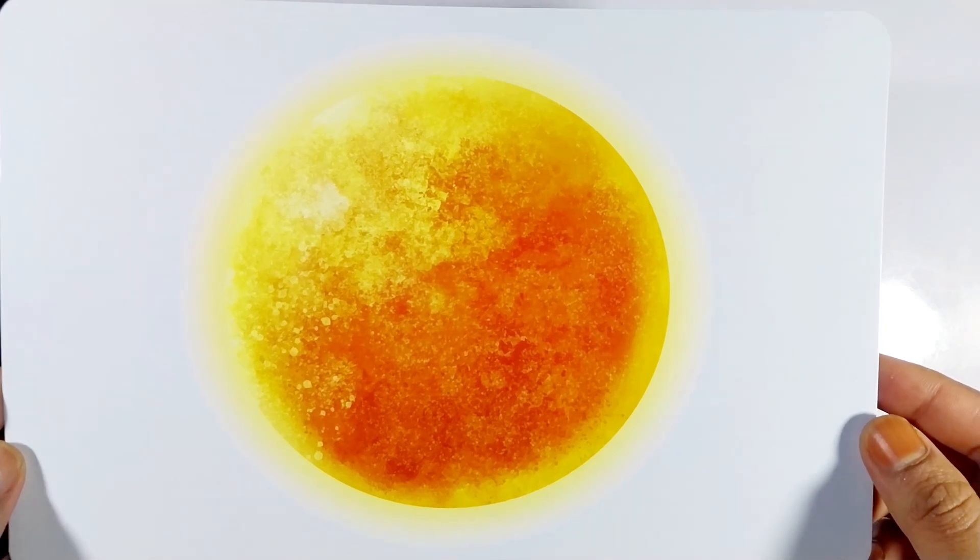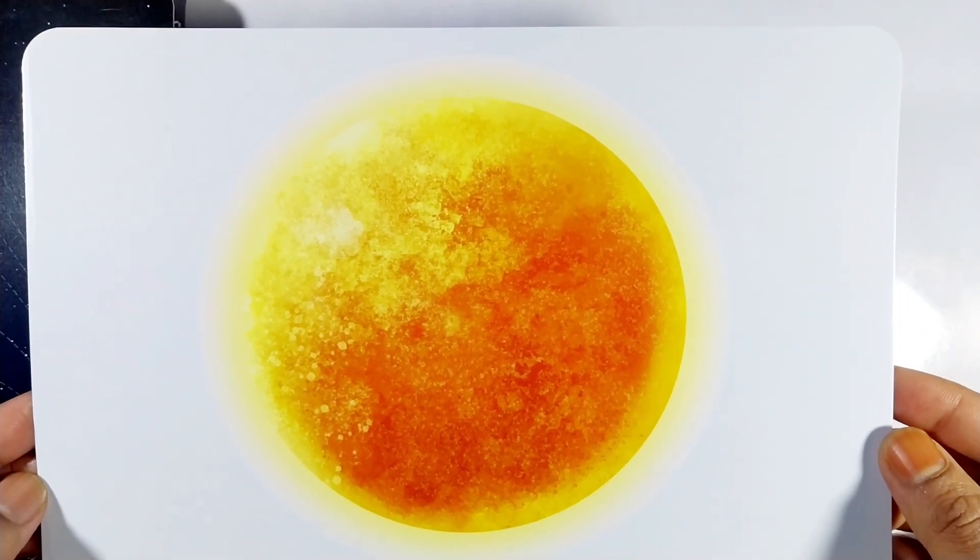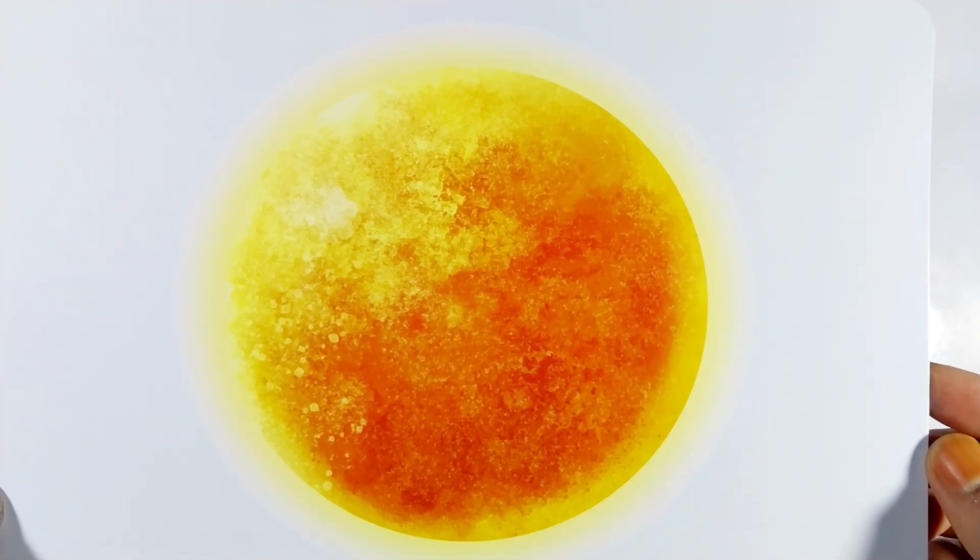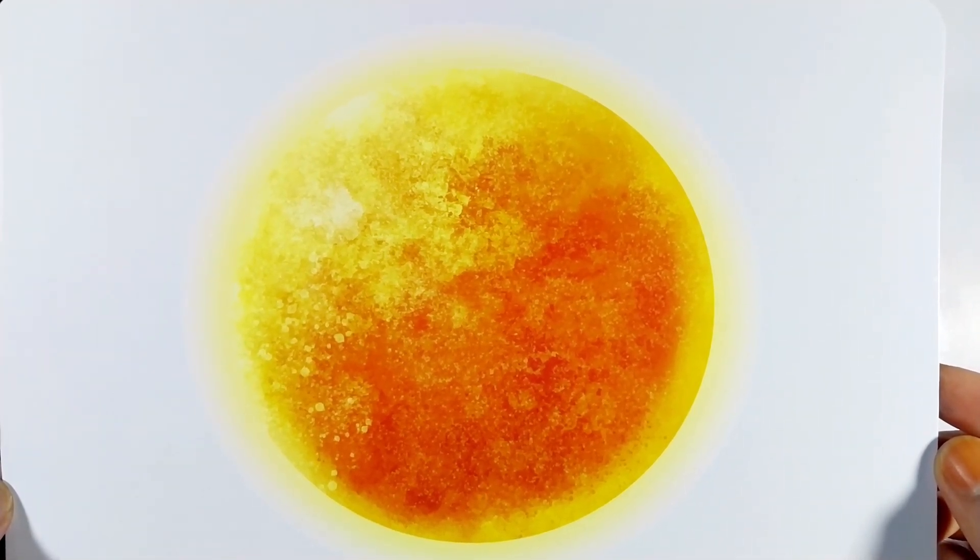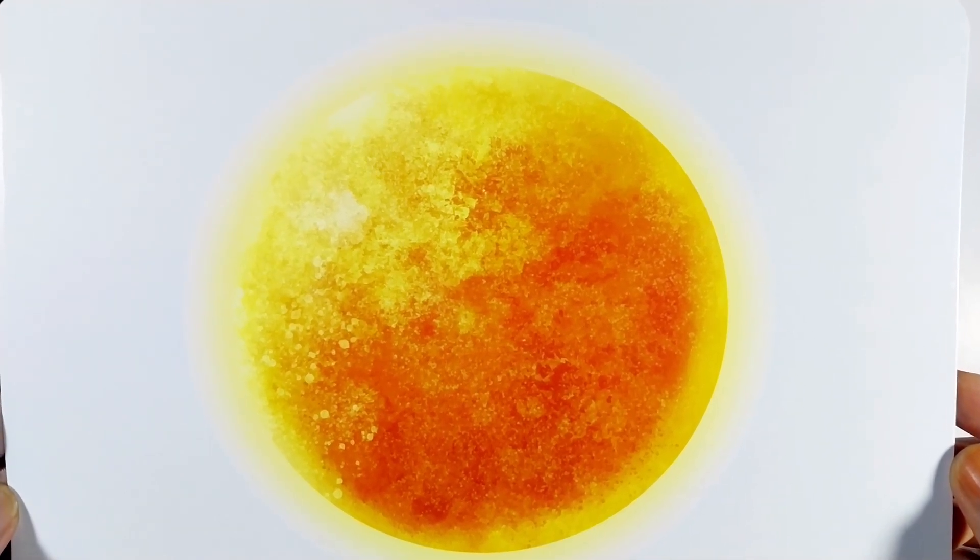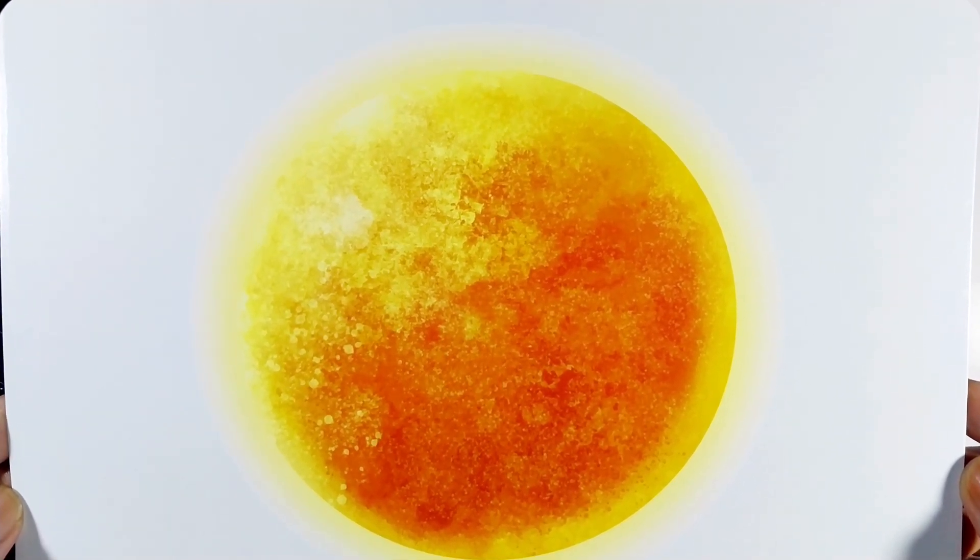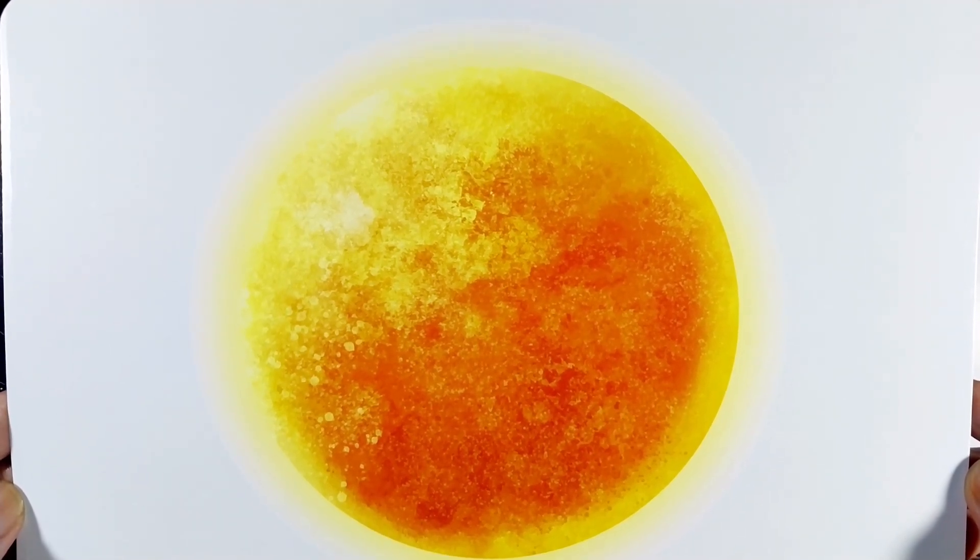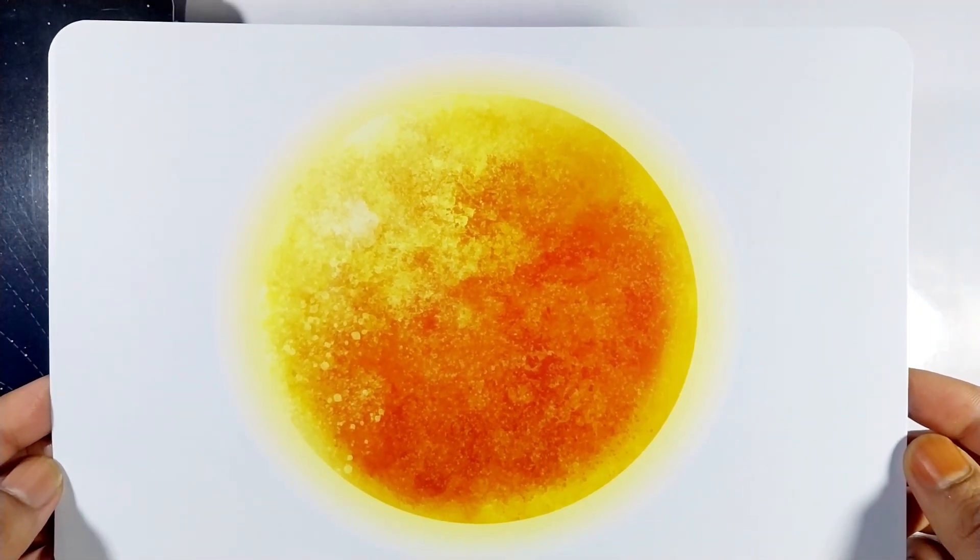The sun is a giant glowing ball of gas in space. It gives us light and heat, making life possible on Earth. We can see the sun during the day, but it disappears at night.